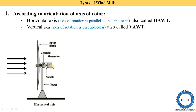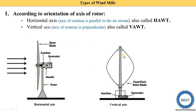The second type is the vertical axis windmill, or vertical axis wind turbine, written in short as VAWT. Here, the axis of rotation is perpendicular to the air stream, or the shaft or rotor is in the vertical direction. In this diagram, the vertical part is the shaft, and the air stream and the shaft are perpendicular to each other.